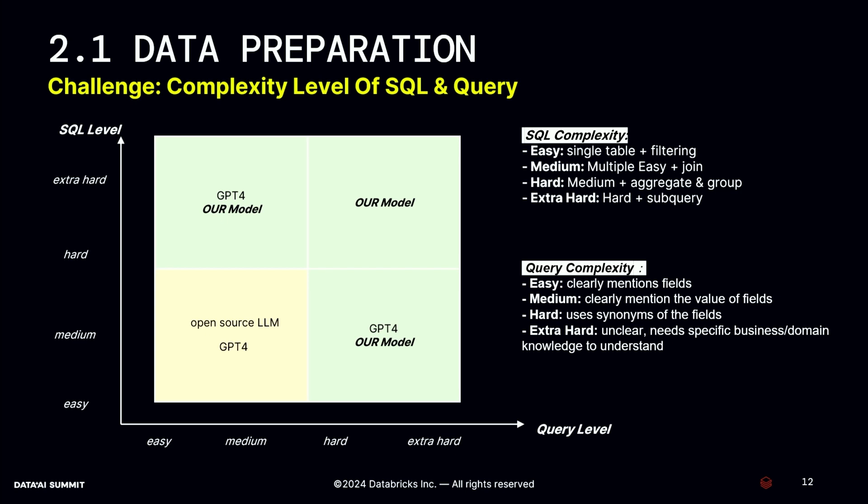We should pay attention to query complexity, which is classified into four levels: easy, medium, hard, and extra hard. Our goal for the fine-tuned model is to solve problems across all four levels, especially for the top-right corner area — the hardest queries. That's what we are targeting.